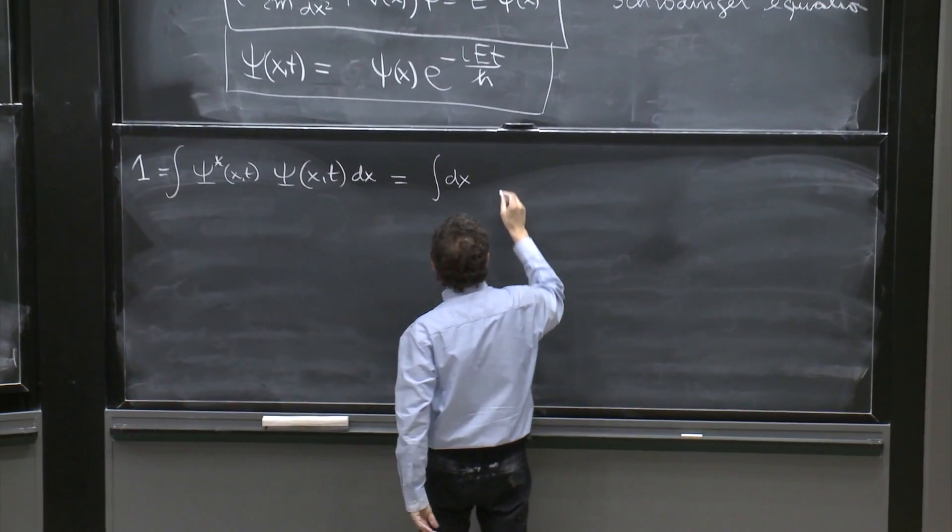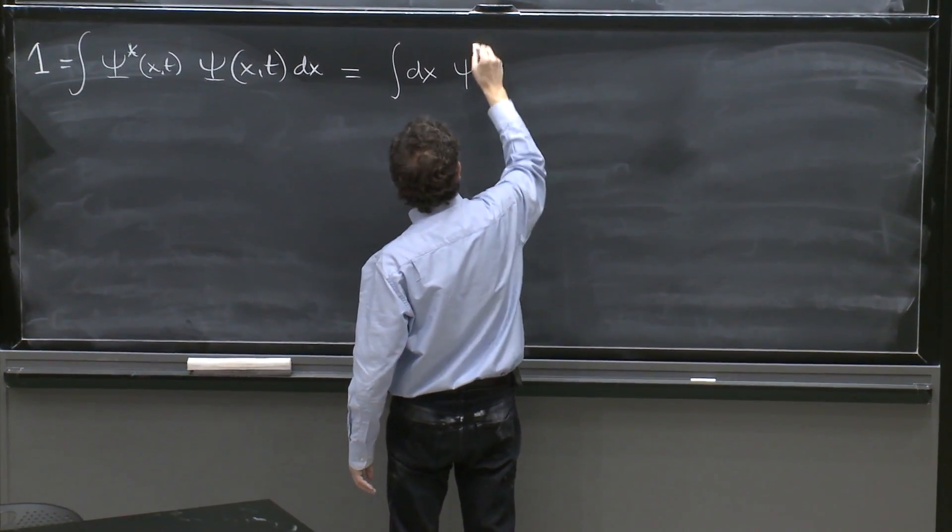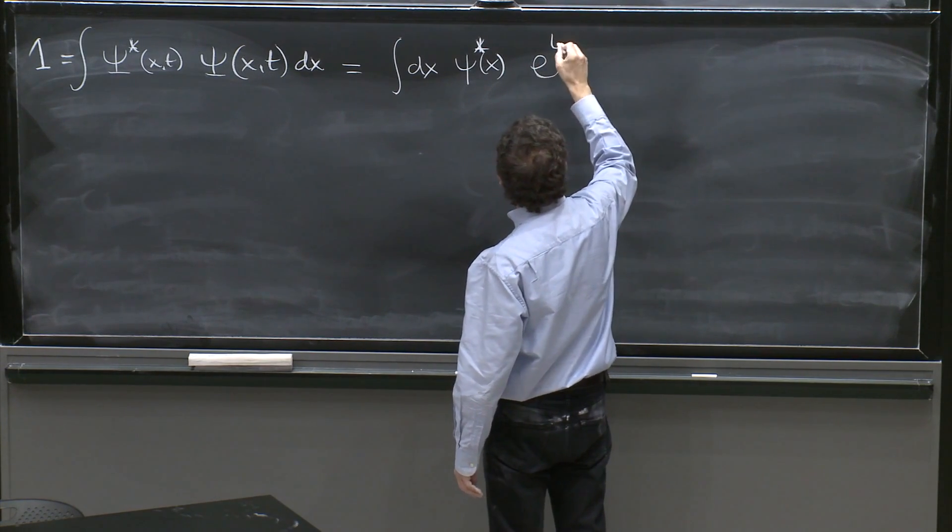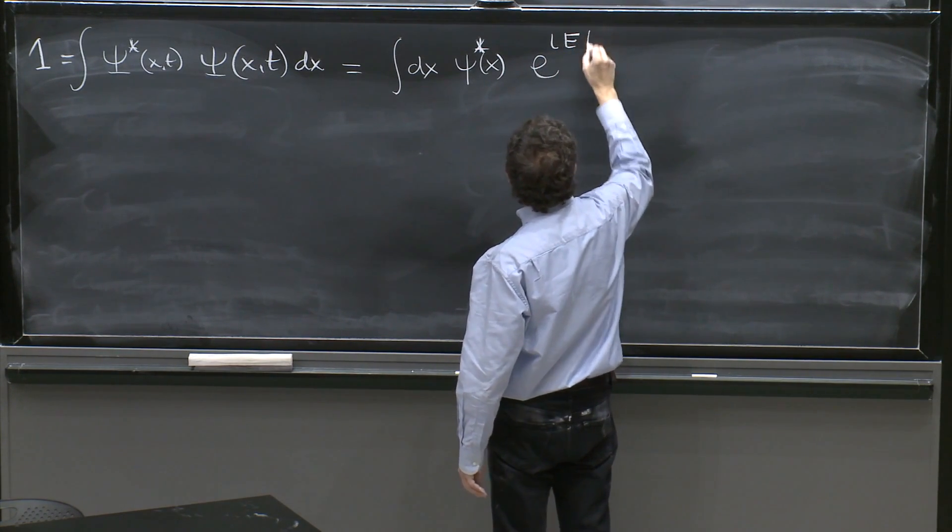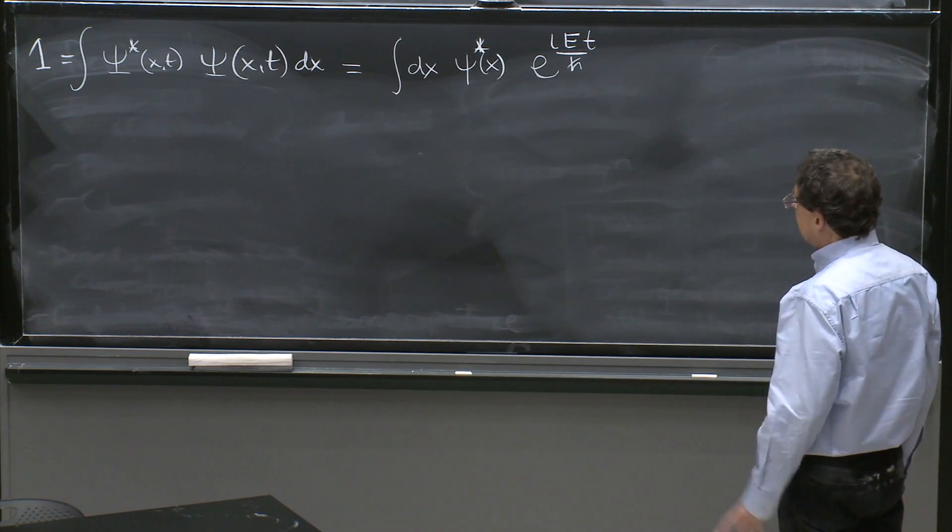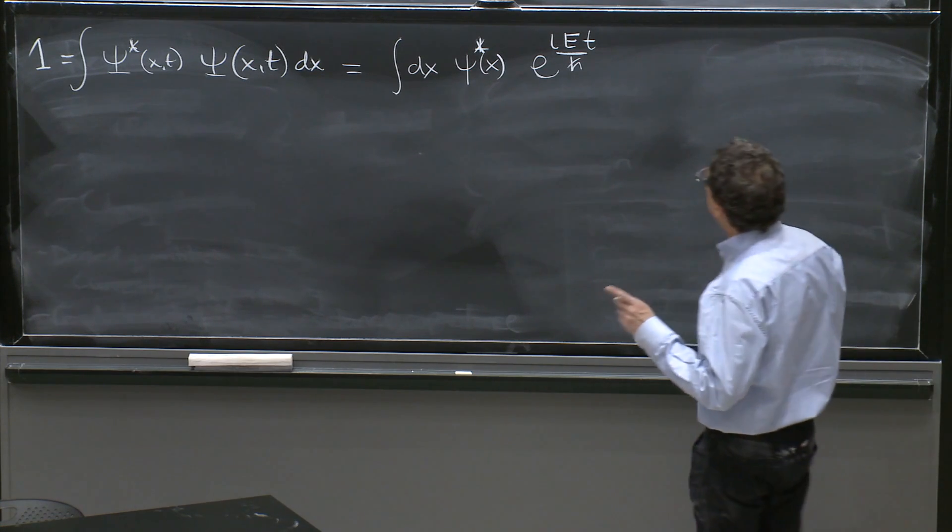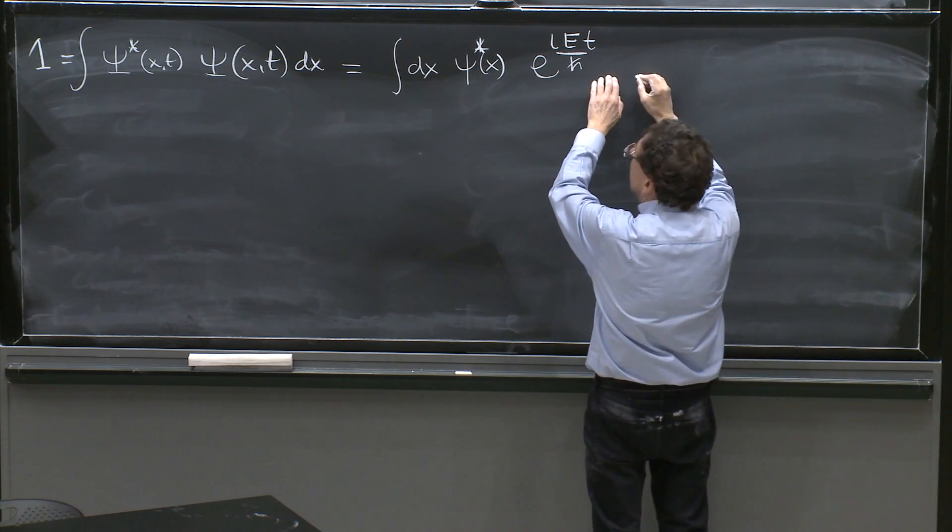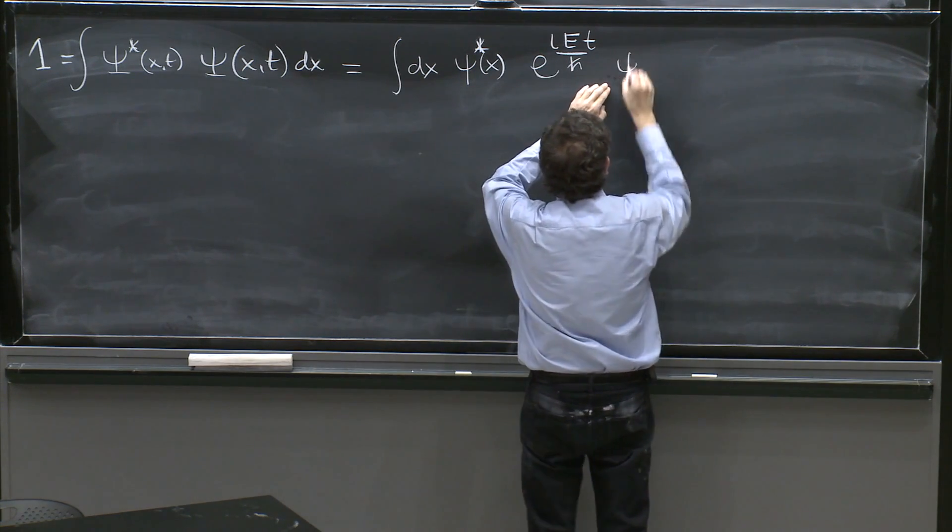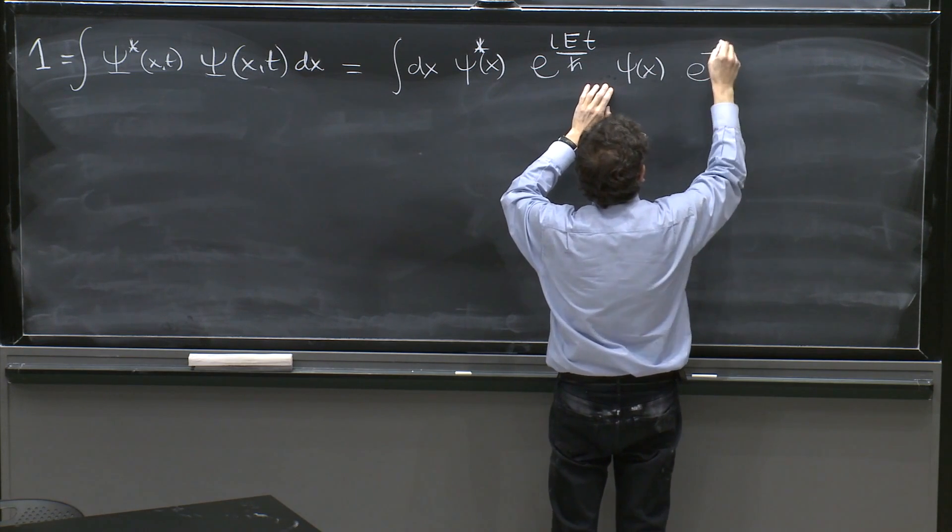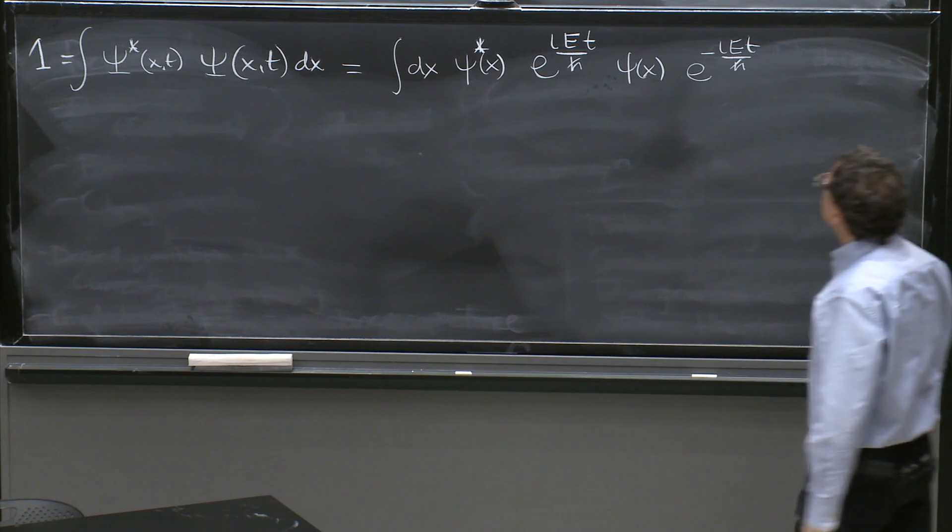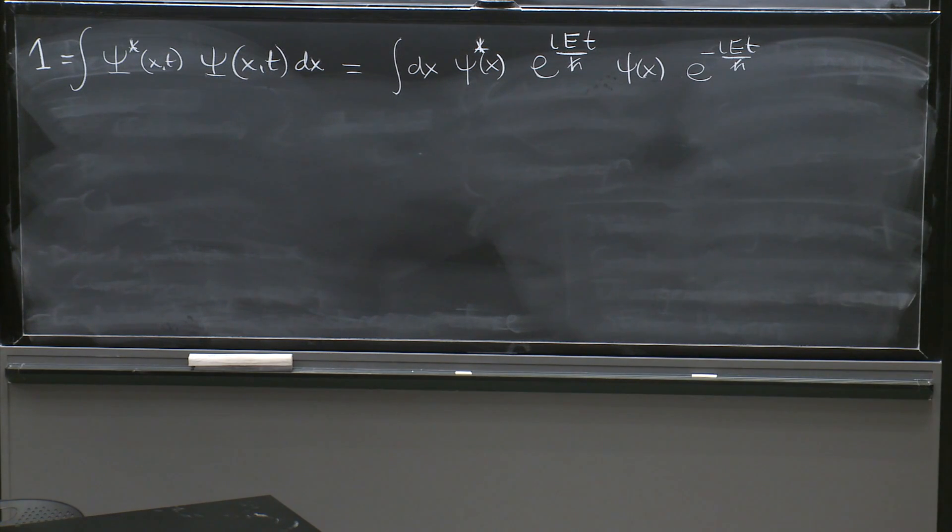So you have psi of x star. And now, we could say it's e to the iEt over h-bar. That's the complex conjugate. Now, on the other hand, this other term is psi of x e to the minus iEt over h-bar.